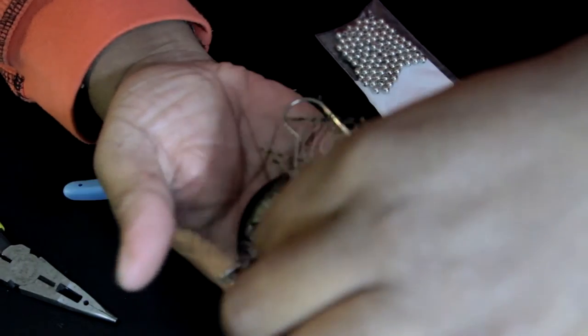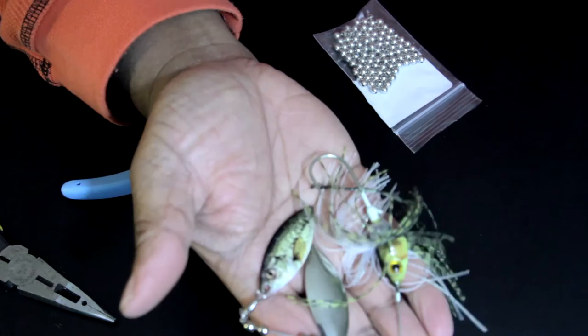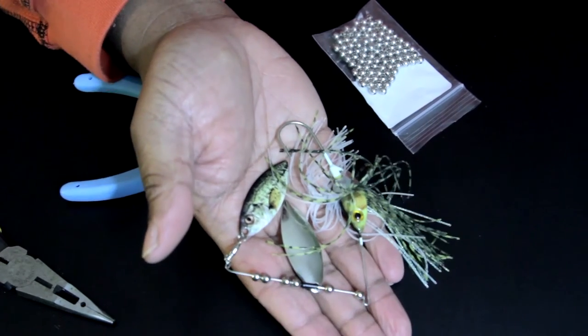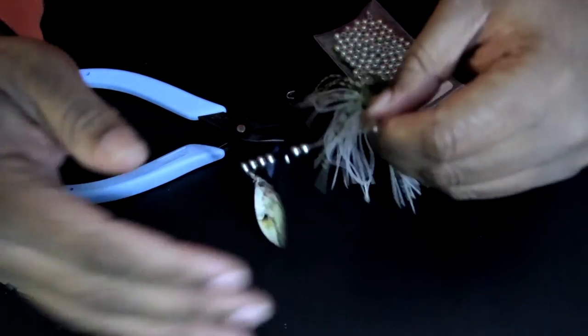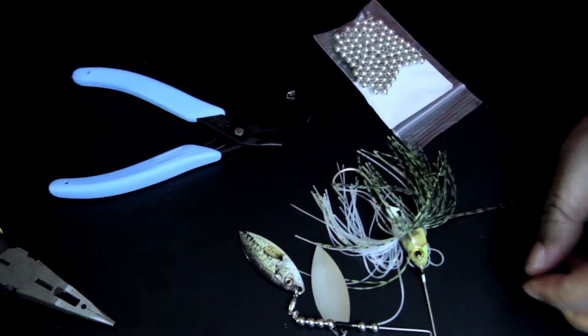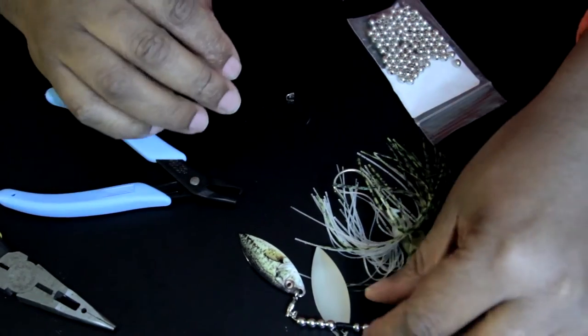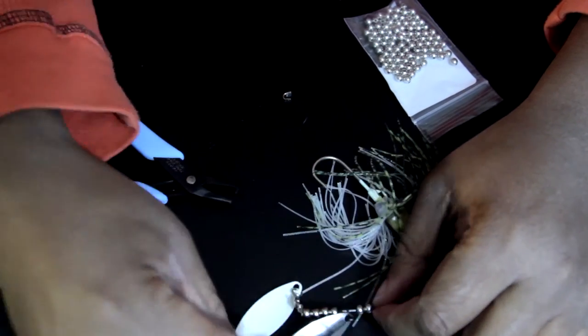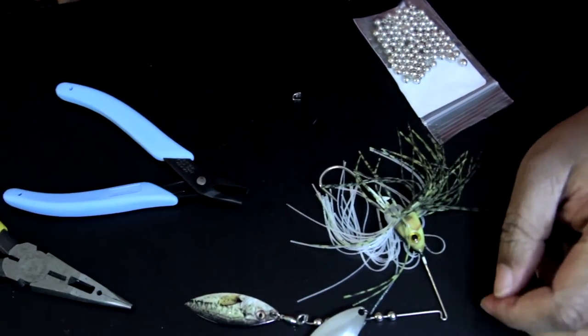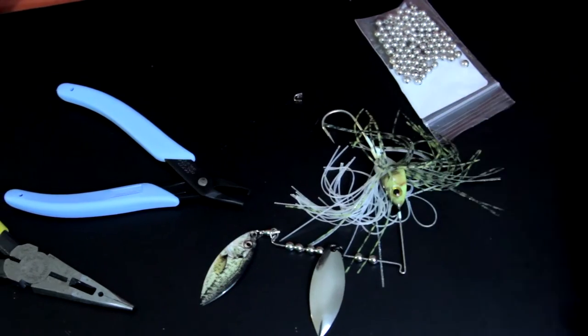So now I'll hold it in my hand so you can see it. I have my own custom spinner bait. There it is. It only cost me a few bucks and about 10 minutes to put together. And I'm going to add that to my fishing arsenal.